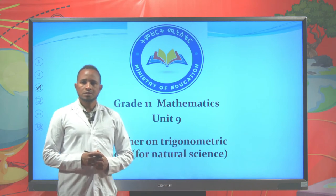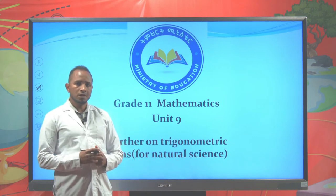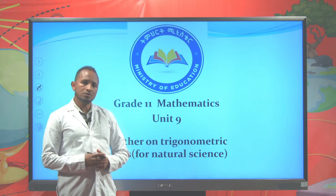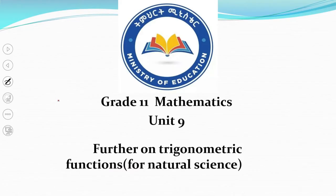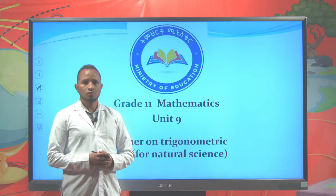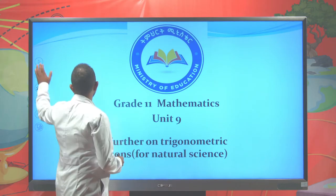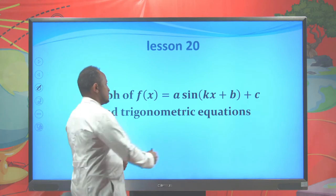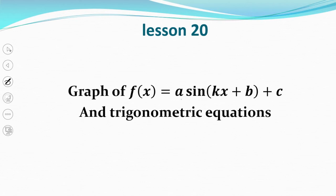Hello, dear students. This is a Grade 11 mathematics lesson on Unit 9: Further on Trigonometric Functions. This chapter is designed for natural science students only. Today we are going to look at the graph of f(x) = a·sin(kx + p) + c and try to solve some trigonometric equations.